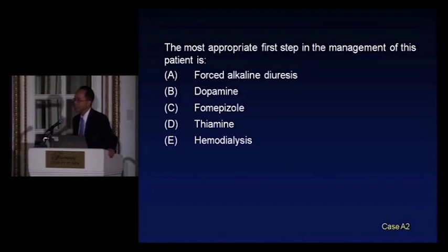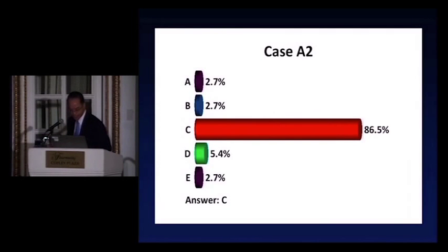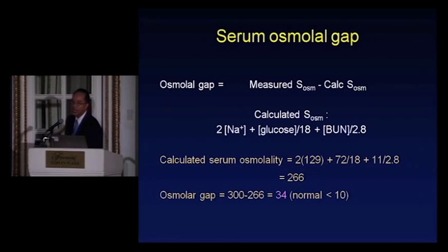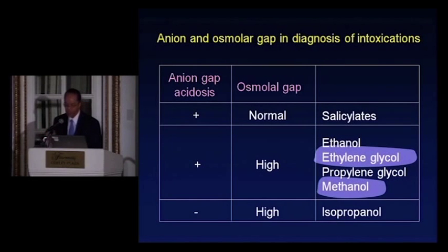The answer is fomepizole. This patient has a pure anion gap metabolic acidosis, and most importantly, an osmolar gap — the calculated osmolality is 266 while the actual osmolality is 300. You could guess that because the measured serum osmolality was high but the glucose and urea were pretty normal. With a high osmolar gap plus anion gap acidosis in the absence of ethanol, you're thinking primarily about ethylene glycol and methanol, both of which need treatment with either an ethanol drip or fomepizole.